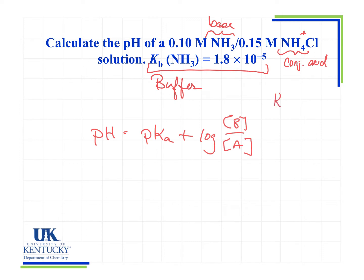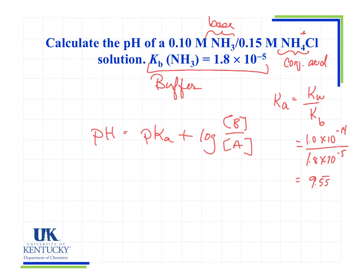To get the Ka, we know that Ka equals Kw divided by Kb. Kw is 1×10⁻¹⁴ divided by 1.8×10⁻⁵, and that gives me 9.55×10⁻¹⁰. There's the Ka, so now we're ready to calculate the pH.